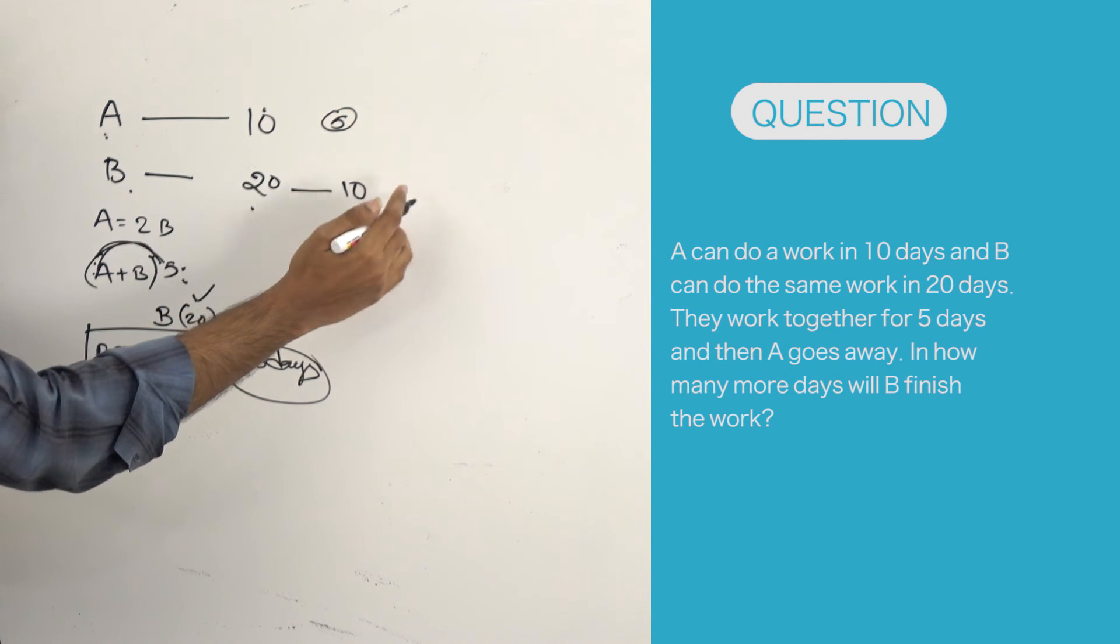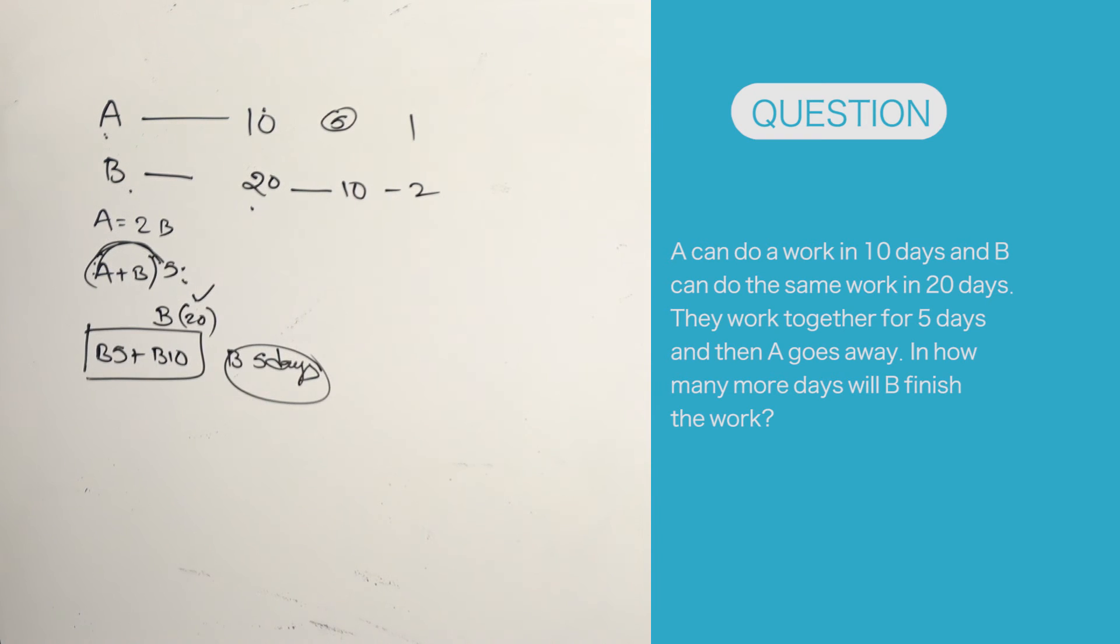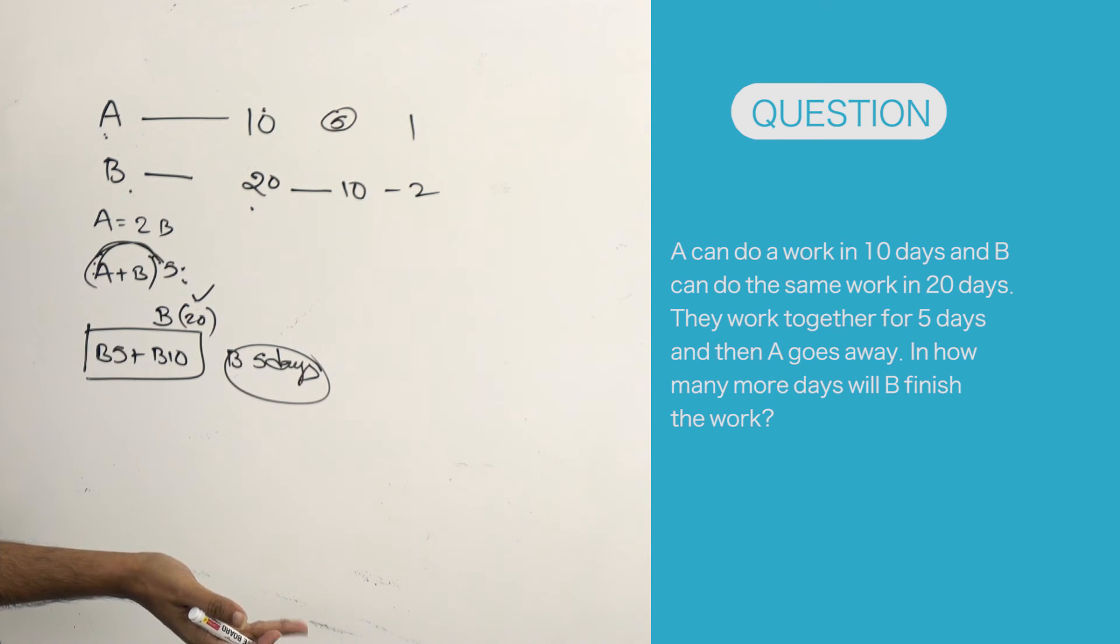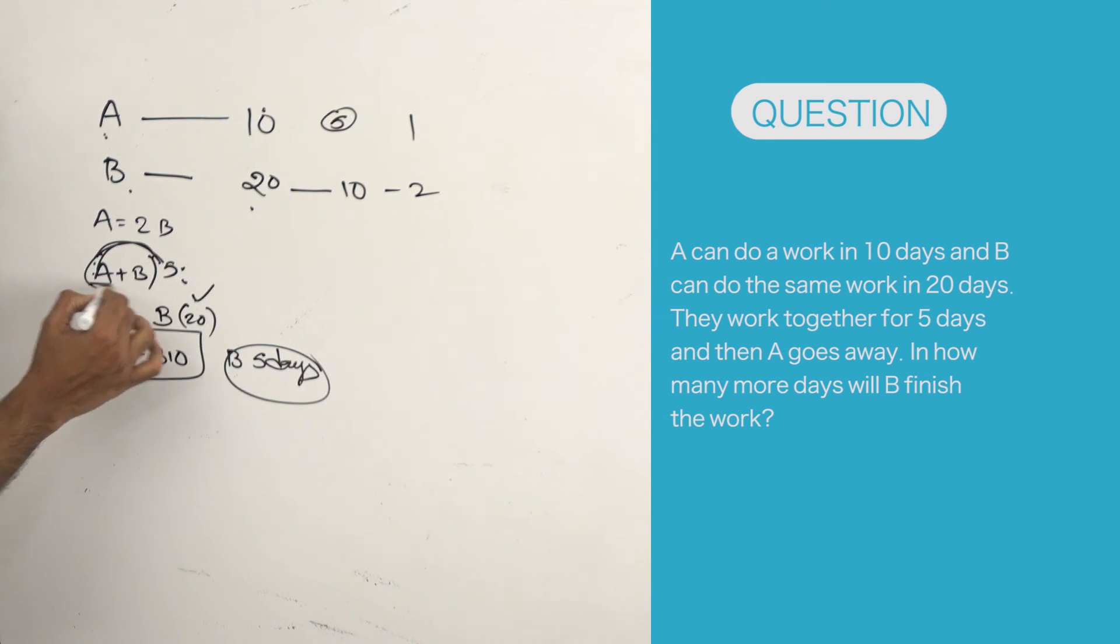Whatever work he does in 2 days, he will do it in just 1 day. That's how it is. That means A's 10 days work is equal to B's 20 days work. Now A and B together worked for 5 days. That means B worked for 5 days. Because already I know A is equal to 2 B's, okay?